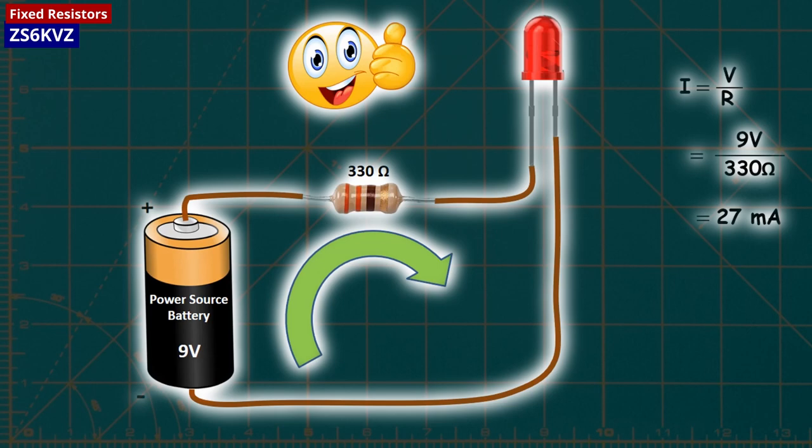Suitable resistors should be used to adjust the current flowing through the circuit to prevent damage to the circuit elements used.